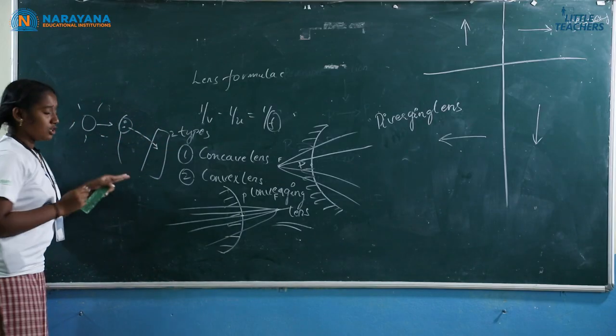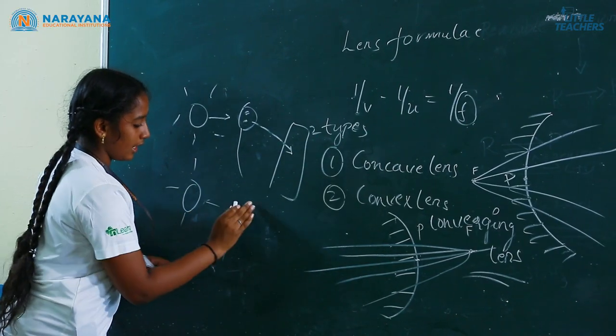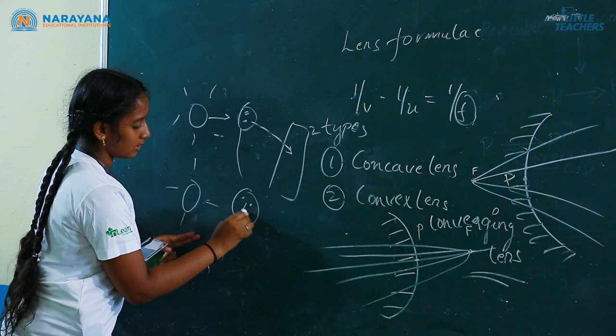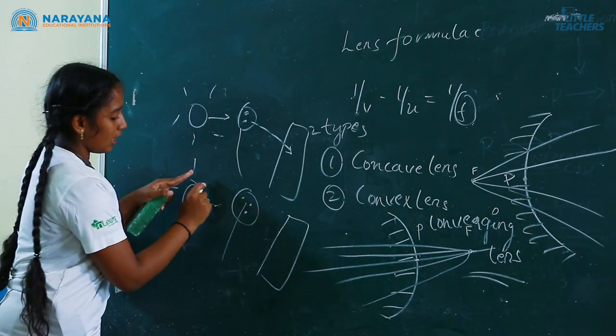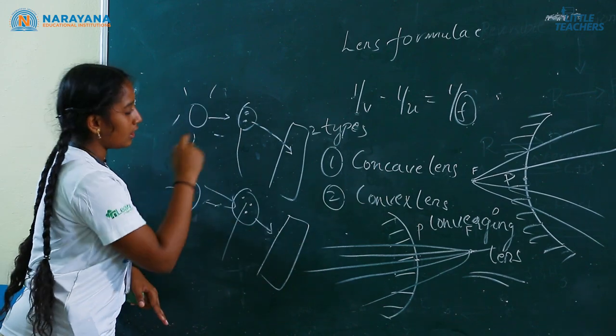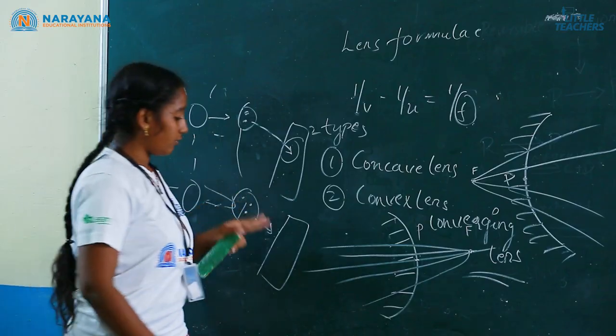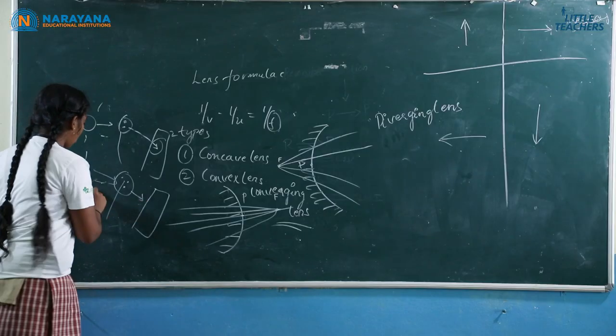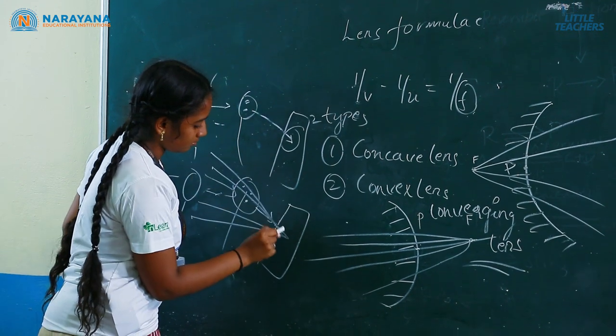And here also we can do an experiment, that is a sun and a magnifying lens and a paper. Before the experiment, if it catches fire late, it is known as concave. If it catches fire very fast, it is known as convex.